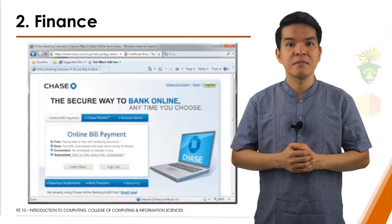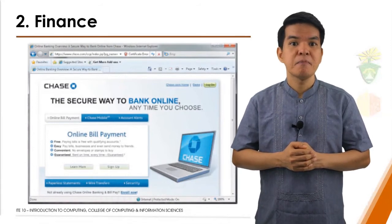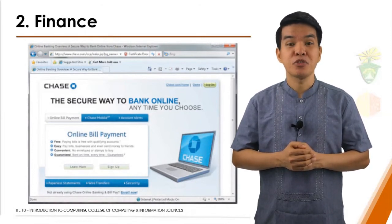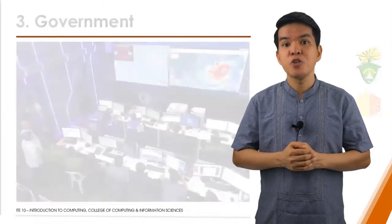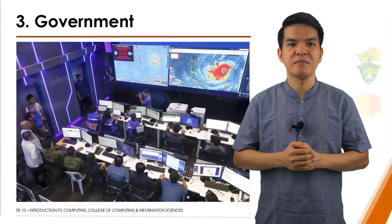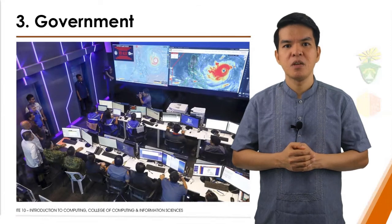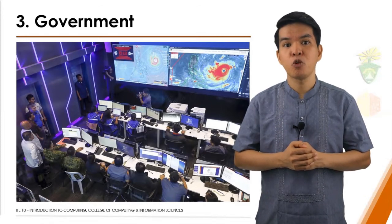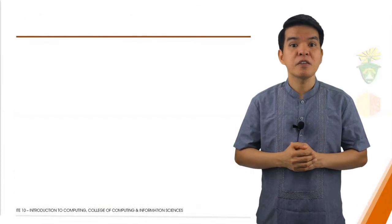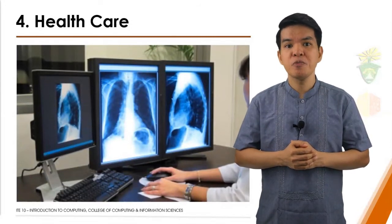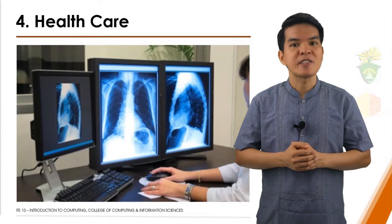With online banking, users access account balances, pay bills, and copy monthly transactions from the bank's online information system right into their computers. In government, computers play a significant role, especially in implementing and administering policies, disaster preparedness, and mitigation. For example, in the image shown, monitoring of typhoons becomes efficient with the use of advanced monitoring tools and special-purpose computers. In the field of healthcare, doctors, nurses, technicians, and other medical staff use computers and computerized devices to assist with medical tests.